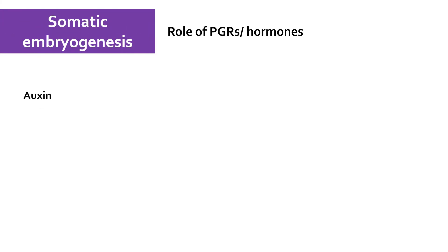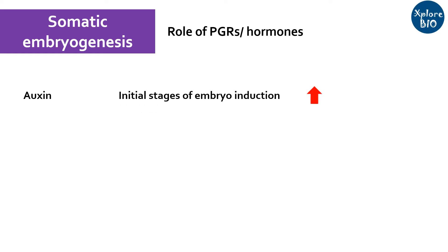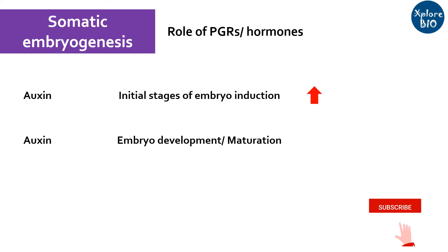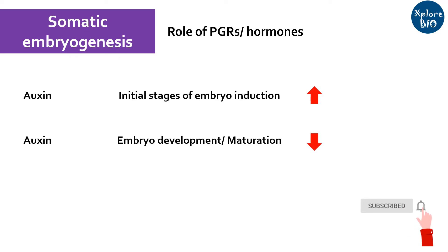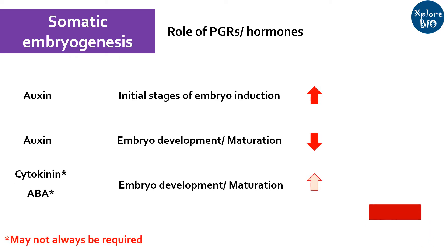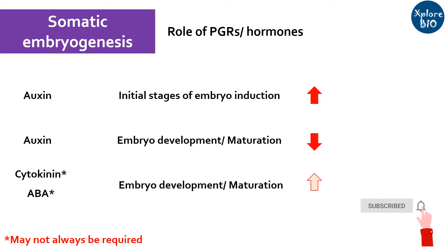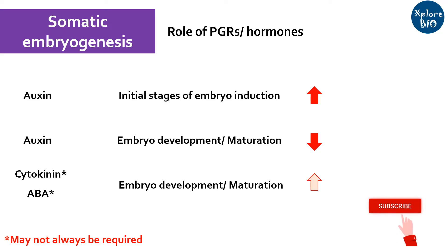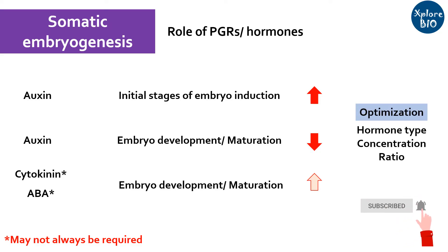Auxin plays an important role in induction of embryo formation. For maturation of the embryo, reduction or absence of auxin is important. In some plants, cytokinin and ABA also help in maturation of the somatic embryo. Depending upon the plant species, explant, and type of somatic embryogenesis, selection of hormone and its ratio needs to be optimized.